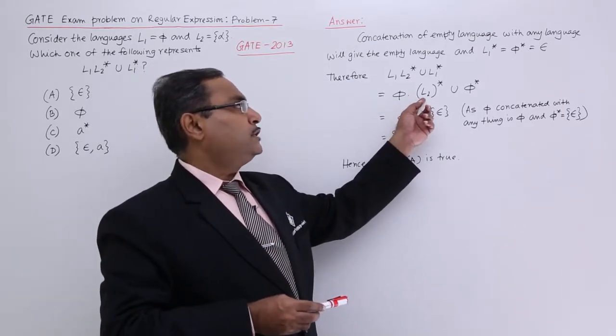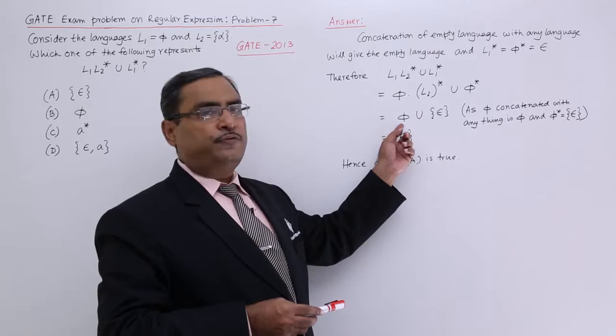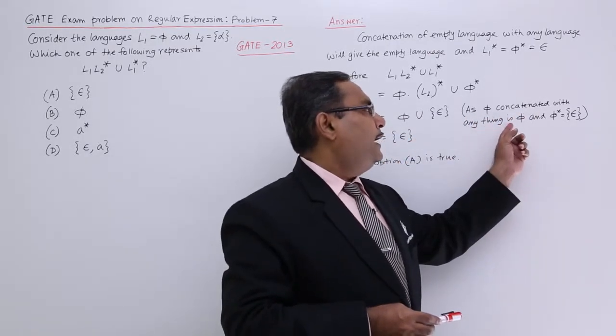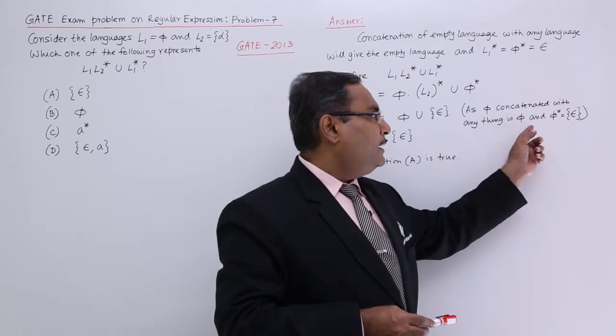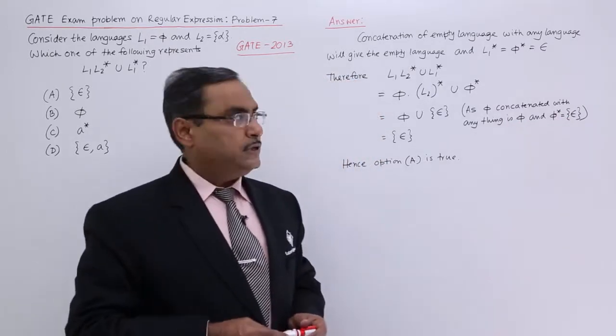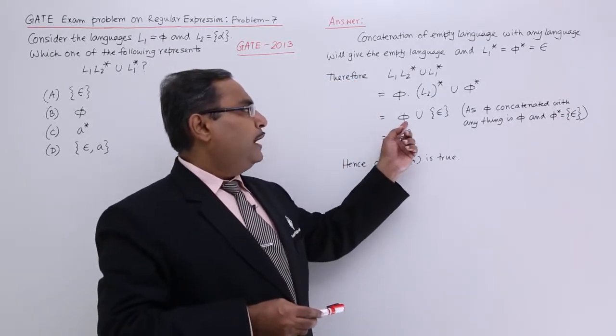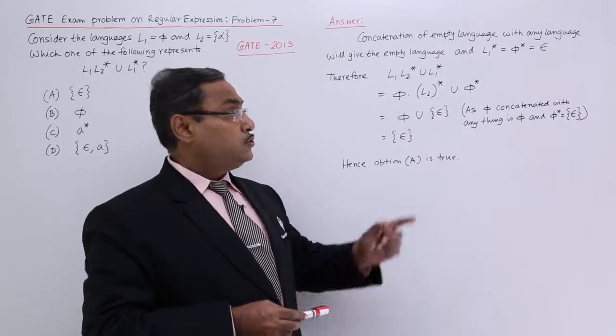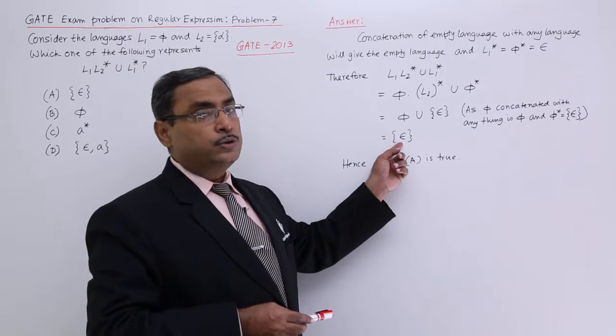Phi concatenation with any regular expression will produce phi. As phi concatenated with anything is phi and phi star is equal to epsilon, phi union epsilon will give you epsilon. In this way, we could solve the problem.